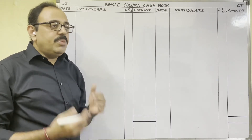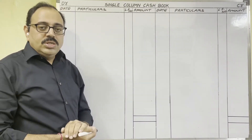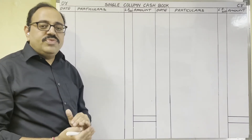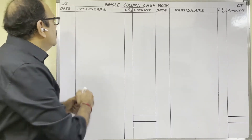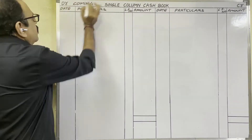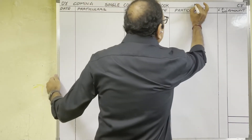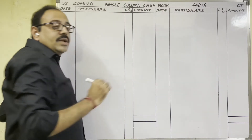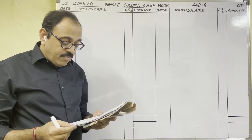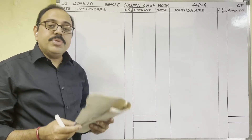The real account rule is: debit what comes in, credit what goes out. We should assume that we are preparing this book in the firm's books, so think from the firm's point of view. If cash is coming into the firm, write on the debit side. If cash is going from the firm, write on the credit side.